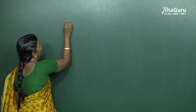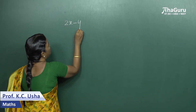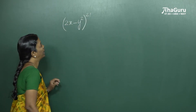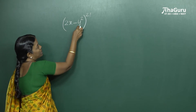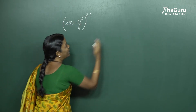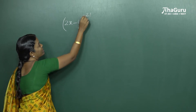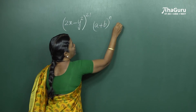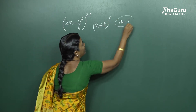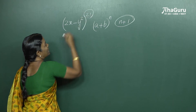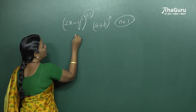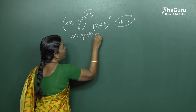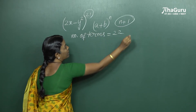We'll now find out the number of terms in this expansion: (2x minus y²) raised to the power 21. This is a binomial expansion. We are not going to expand it fully to find the number of terms. If it is (a + b) whole power n, the number of terms in the expansion will be n plus 1. So in this case, the power is 21, because of which the number of terms will be equal to 21 plus 1, or 22.